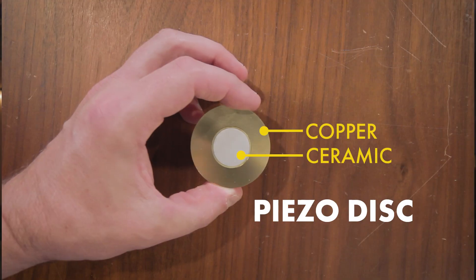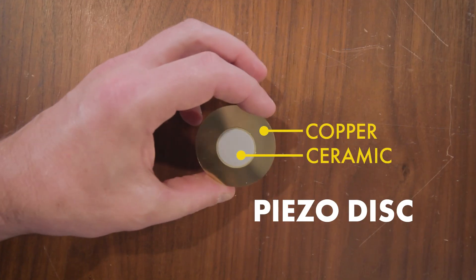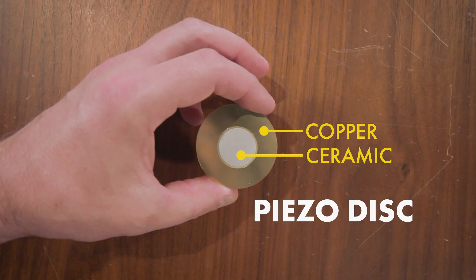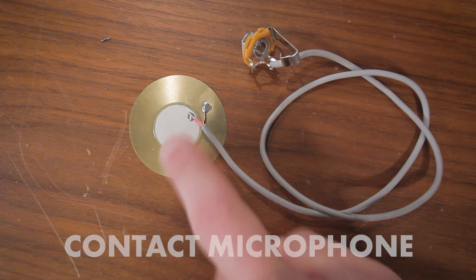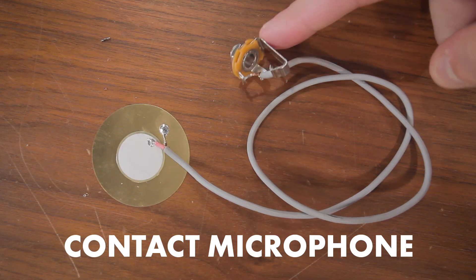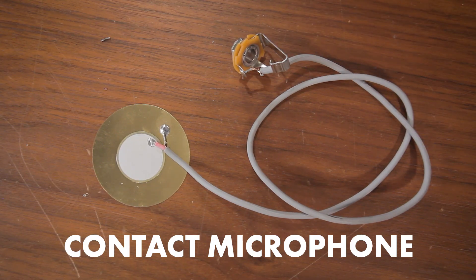This is a piezodisc. It's a bit of copper and ceramic that can turn vibrations into electricity. With a few simple elements, you can turn the piezodisc into a contact microphone that can turn that electrical current into audio signals like this.